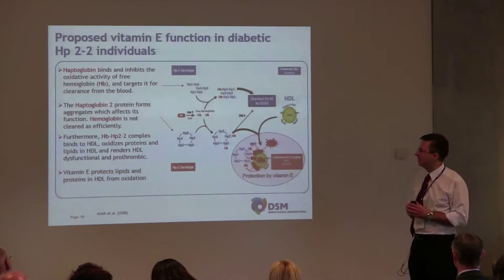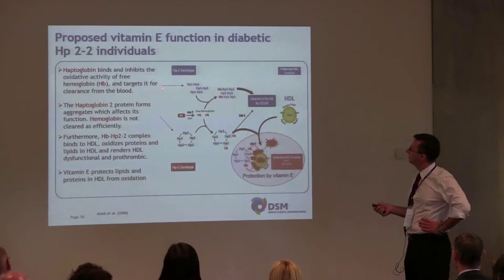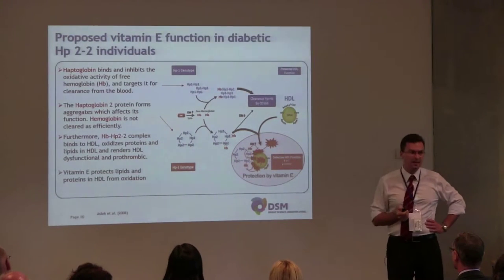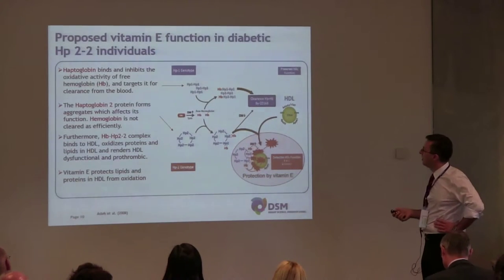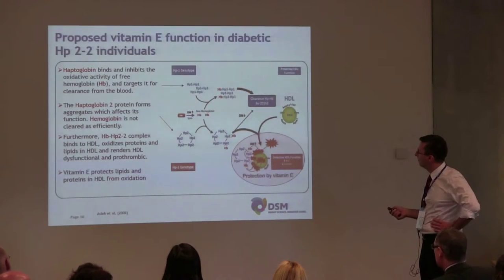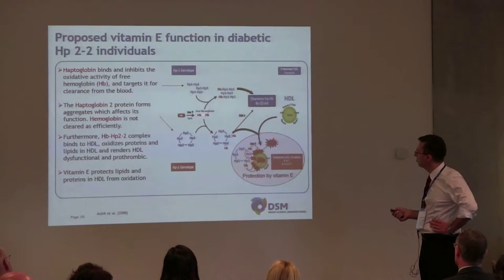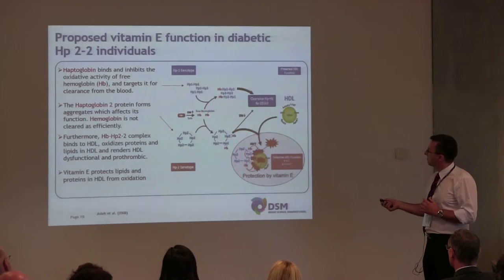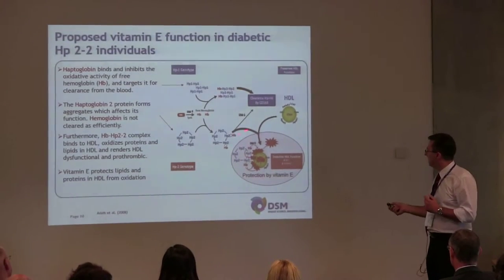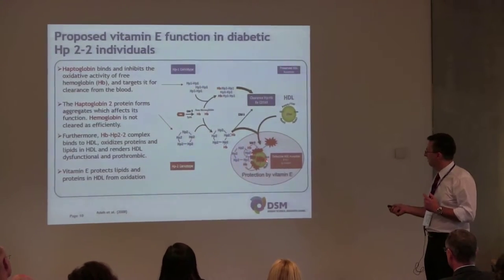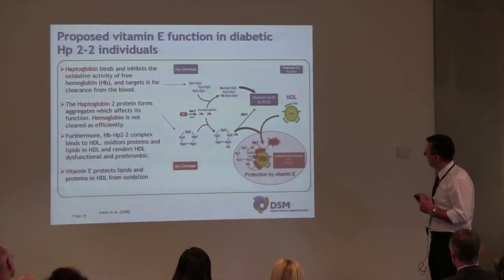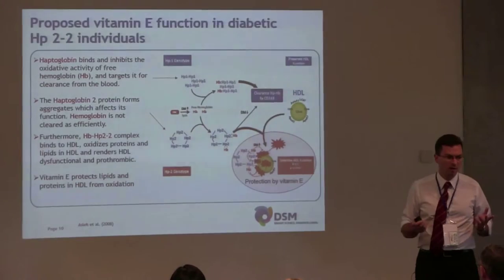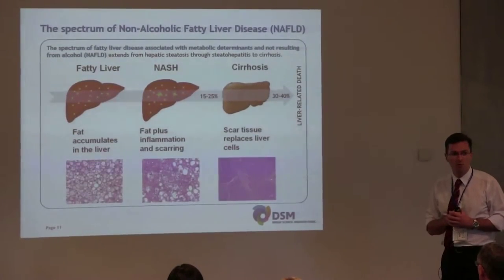I don't have time to go into all the details, but I would like to mention the proposed function of vitamin E in this harmful subgroup. We are talking about highly reactive free hemoglobin, which is increased in diabetic patients. The HP2-2 protein forms aggregates which connect to this free hemoglobin, but the clearance is not effective, and they have detrimental effects on HDL cholesterol. This is where vitamin E as a powerful antioxidant can come into the picture.